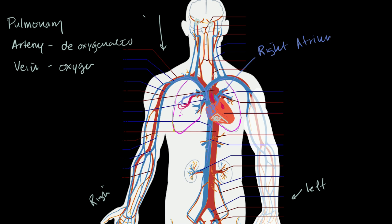Why is this blood deoxygenated? Because this is blood returning from our legs if we're running, or from our brain that had to use respiration, or from our biceps. It shows up in the right atrium - on our left, but this person's right-hand side. From the right atrium it passively flows into the right ventricle; the ventricles do all the pumping. Then the ventricle contracts and pumps the blood into the pulmonary artery. The inferior vena cava and superior vena cava are veins going to the heart carrying deoxygenated blood, which then gets pumped away to the lungs via the pulmonary artery.